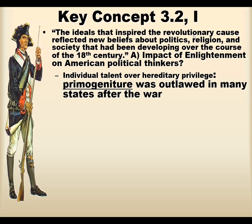Primogeniture — use your Latin: primo means first, genitor means born. The firstborn. And they mean the firstborn son. Until relatively recently, when the queen died, it was the firstborn son who became king. If she had six daughters and then finally had a son, the son got it. They only changed that in y'all's lifetime or just before y'all were born. That's one of the biggest examples of primogeniture — the firstborn son gets everything.